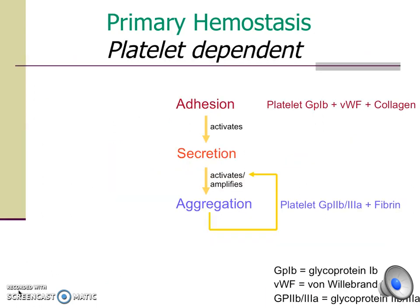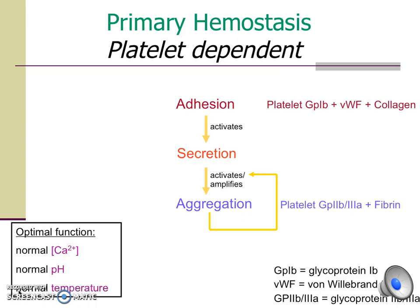This slide summarizes platelet adhesion, secretion, and aggregation in primary hemostasis. In order for primary hemostasis to function optimally, once again there must be normal temperature, pH, and calcium concentration in the blood.